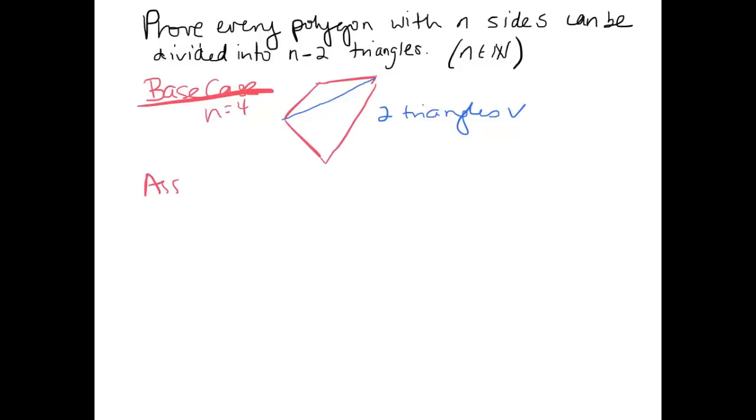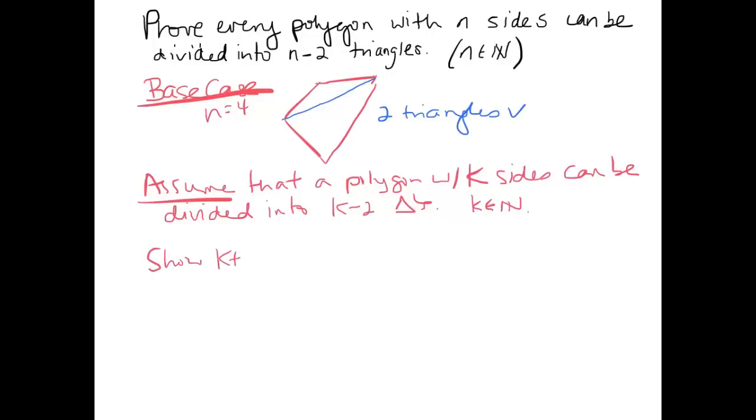So now we're going to assume that a polygon with k sides can be divided into k minus 2 triangles. Alright, and we should make a little note here where k is a natural number. There's our second step. We want to show that a k plus 1 sided polygon can be divided into 2 fewer than that, so k minus 1 triangles.